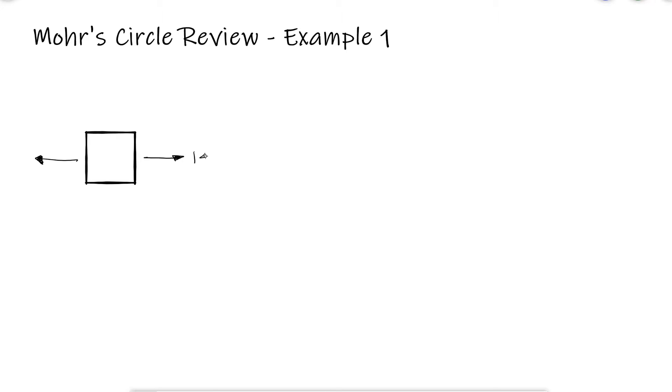For a stress element with 14 ksi for sigma x, 4 ksi for sigma y, and 12 ksi for tau xy, we want to find the principal stresses and the maximum shearing stress. This is the first example for the main video about the Mohr circle review, linked below, so make sure you've watched that before you watch this.